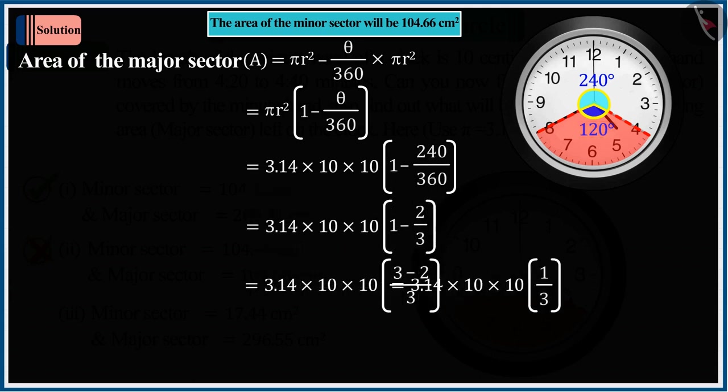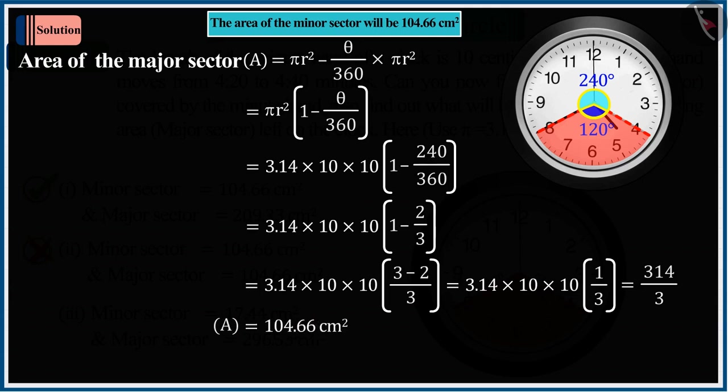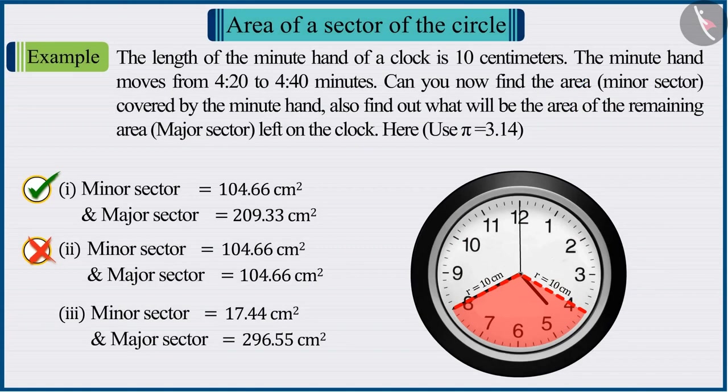But you did not do that, due to which the value of A derived by you is 104.66 square centimeters, which is incorrect.